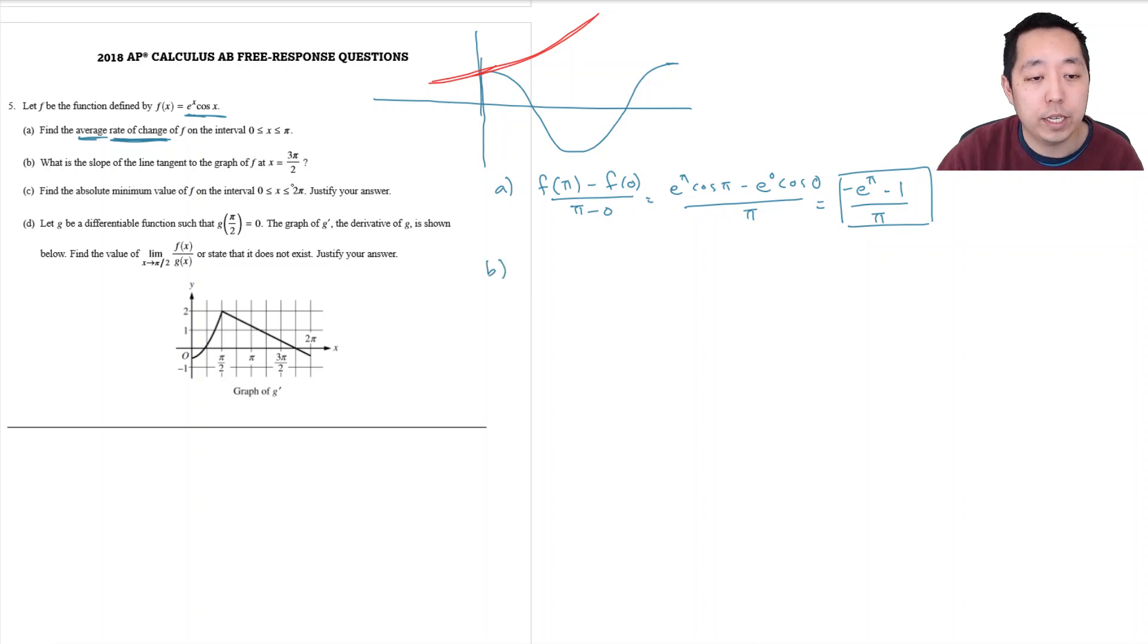For B, what is the slope of the tangent line at x equals 3 pi over 2? So I need to compute the derivative and I do product rule in this case because I'm doing one function of x times another function of x. So I'm going to do e to the x times the cosine of x which is negative sine x plus e to the x, the derivative of e to the x is just e to the x cosine x and I can factor out an e to the x and make this cosine x minus sine x.